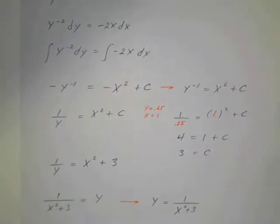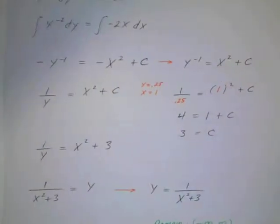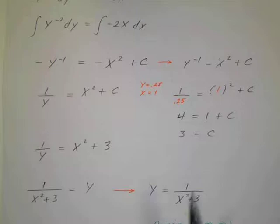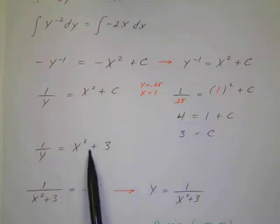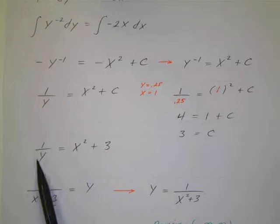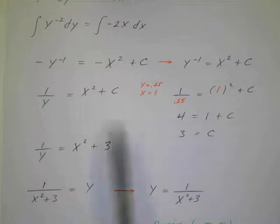So I can put this back in my original equation. So instead of c, I've got 3. So 1 over y equals x squared plus 3. Then I can multiply both sides by y and divide by x squared plus 3.